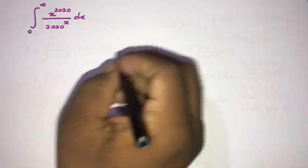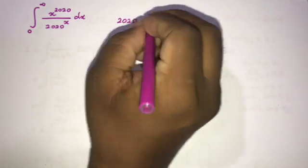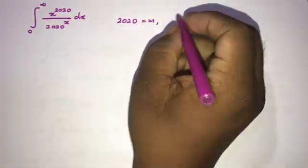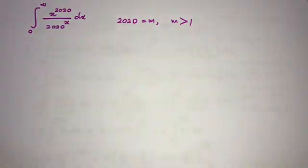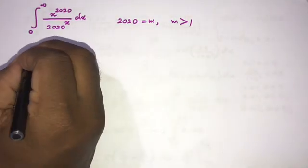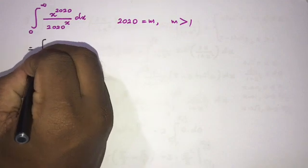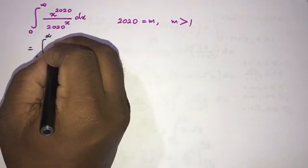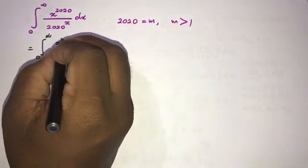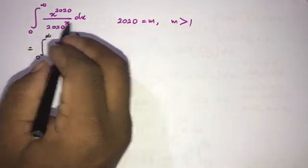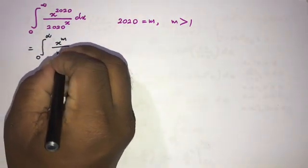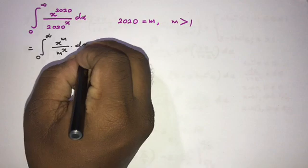To begin, let's take the general case. I'm going to set 2020 equal to m, where m is greater than 1. So we can write this integral as the integral from zero to infinity of x to the m over m to the x power dx.